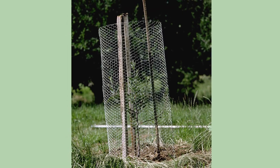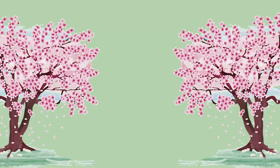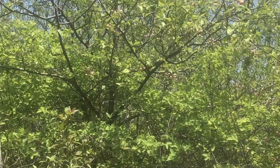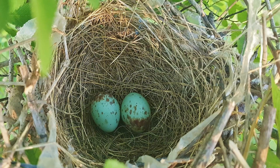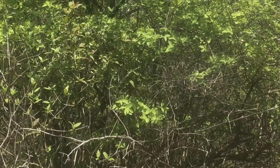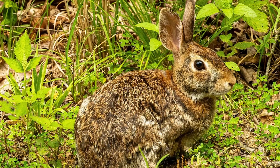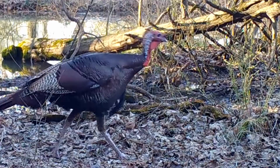Be aware that deer also like crab apple leaves and twigs, and rabbits like the bark, so protect young trees accordingly. To ensure fruit production, it is a good idea to plant at least two crab apples, as many are self-sterile and need a cross-pollinator. Native crab apples also provide cover — their dense and twiggy branching provides excellent nesting cover for songbirds, and thickets can provide cover for mammals and ground-nesting birds like northern bobwhite and wild turkey.